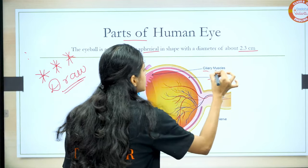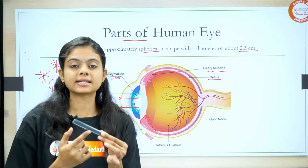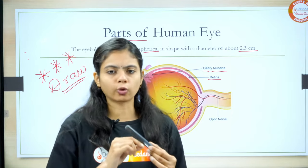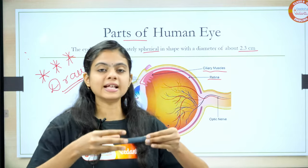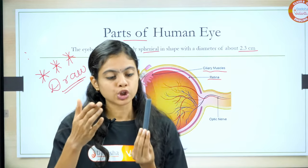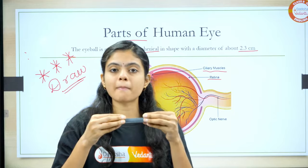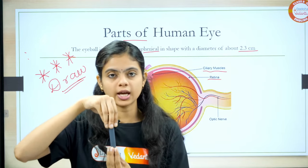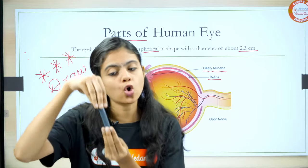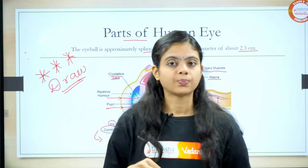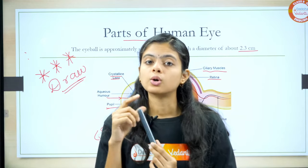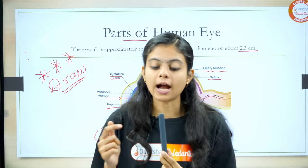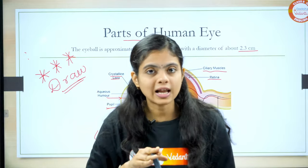Before that, we have here ciliary muscles. I told you about the crystalline lens — it's made up of a jelly-like structure and it has the flexibility to become thick or thin. The lens is held in place by ciliary muscles on both sides. What's the function of ciliary muscles? They hold the lens at its proper position. This ciliary muscle helps to form the image on the retina. We know that the lens forms the image properly on the retina, and the ciliary muscles help this lens.